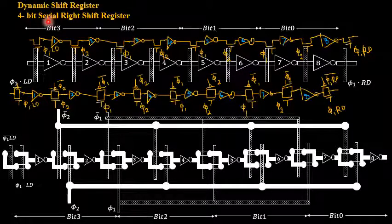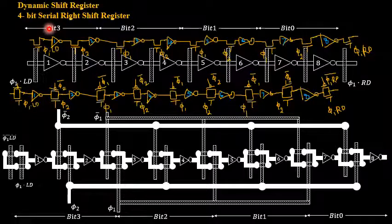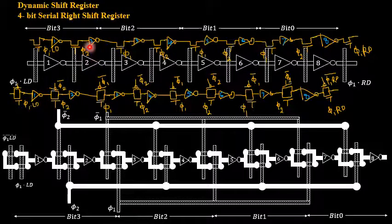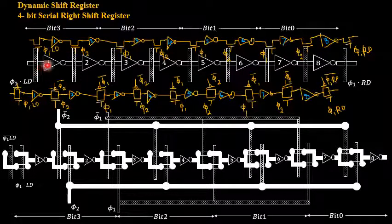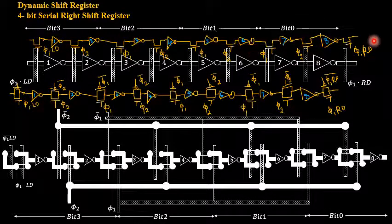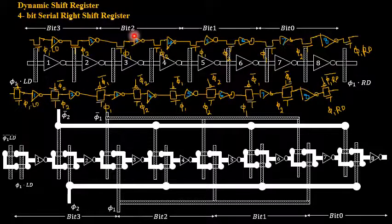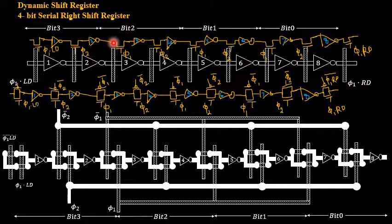Let us discuss whether it is in the form of an inverting type or a non-inverting type of dynamic shift register. If you look into the first diagram, I have represented it using transistors as well as NOT gates, along with a polysilicon and a diffusion layer. The transistor and NOT gate represent the circuit diagram for a 4-bit serial right shift register in terms of NMOS logic or NMOS pass transistor usage.